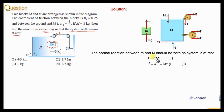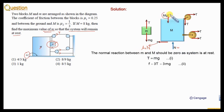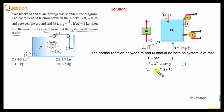Now let us write the maximum possible value of small m. The maximum possible friction force between block capital M and the ground is the limiting friction: mu2 multiplied by the normal reaction N. We can write N equal to capital Mg plus T. Since T equals small mg, the maximum friction force is f_max equal to mu2 multiplied by (Mg + mg), which gives mu2 multiplied by (capital M plus small m) multiplied by g — this is the third equation.